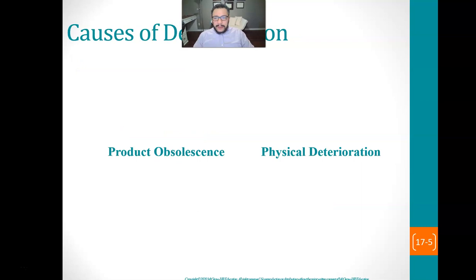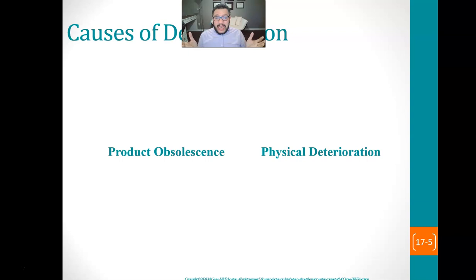Why do things depreciate? Number one is product obsolescence — the product has no value anymore because it doesn't do what it was supposed to do. It can also physically deteriorate. If it's a physical item being used, it's not going to be in the same shape over time. That's the concept we're dealing with when talking about depreciation.